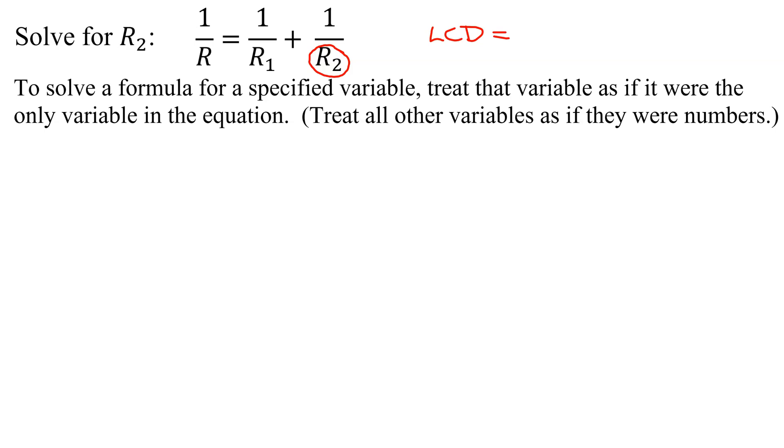So to find the least common denominator, you go to your first denominator, I definitely need an R. Go to your next denominator, do I have an R1 here? No, so I'm going to have to multiply by R1. Go to your third denominator, do I have an R2 here? No, you're going to have to multiply by R2. So your least common denominator is R times R1 times R2. Because remember, these three variables represent different things.